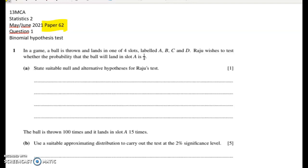It's a binomial hypothesis testing one. We've got a game where a ball is thrown and it lands in one of four slots, A, B, C or D. Raju wants to test whether the probability that the ball will land in slot A is one quarter. For one mark, state suitable alternative and null hypotheses for Raju's test.